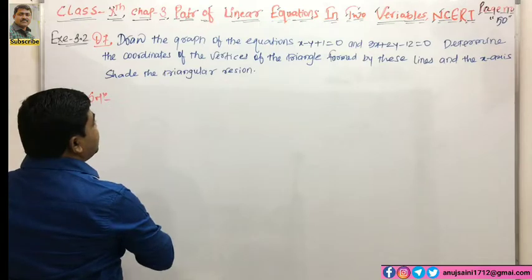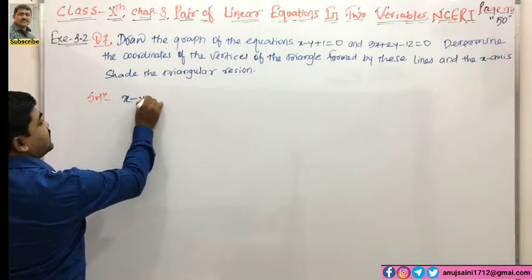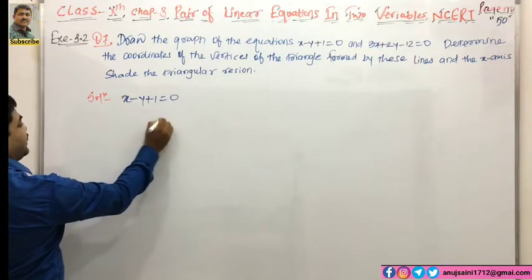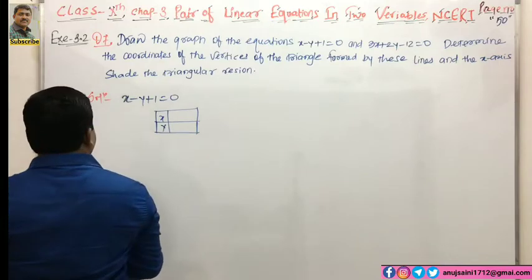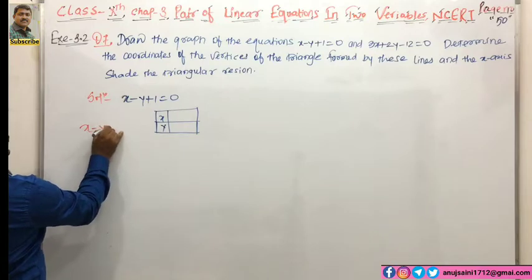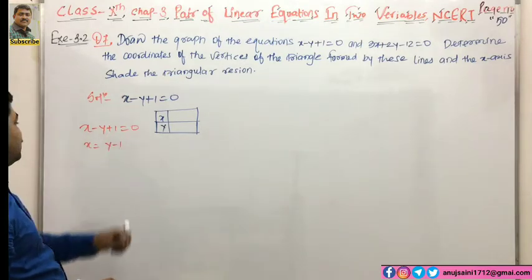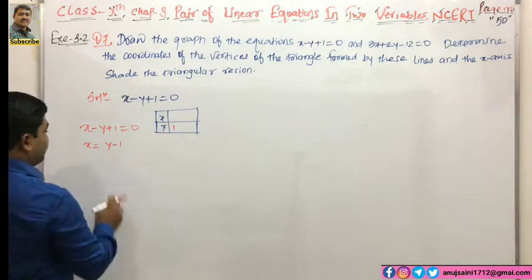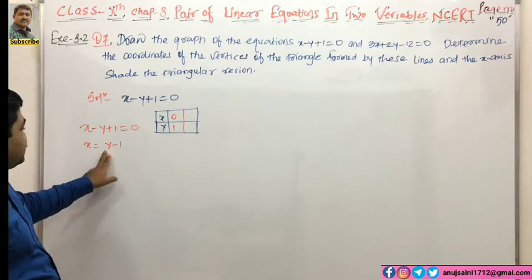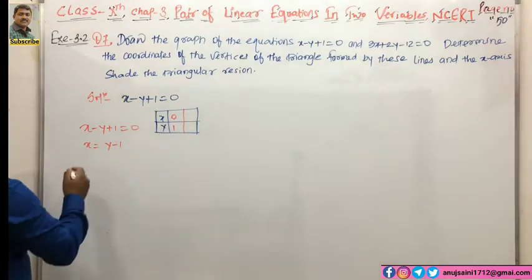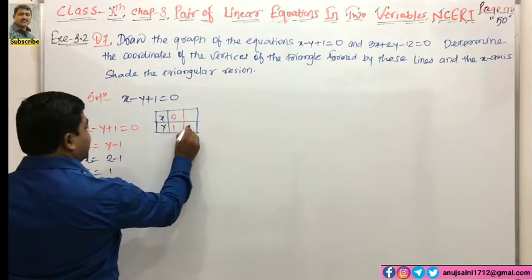पहले equation है x minus y plus 1 is equal to 0। Minimum two values हमें find करनी होती हैं। इसे x is equal to y minus 1 लिख सकते हैं। अगर y की value 1 लेते हैं तो x की value 0 आएगी। अगर y की value 2 लेते हैं तो 2 minus 1, x is equal to 1 आएगा।